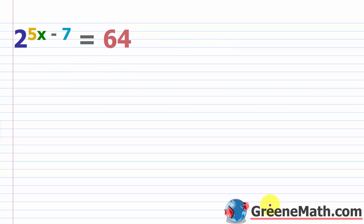It's easy enough — let's jump right in and look at an example. We have two to the power of five x minus seven is equal to 64. When you see problems like this, a lot of it is just making you think through your properties of exponents. You should know at this point that 64 is two to the sixth power.